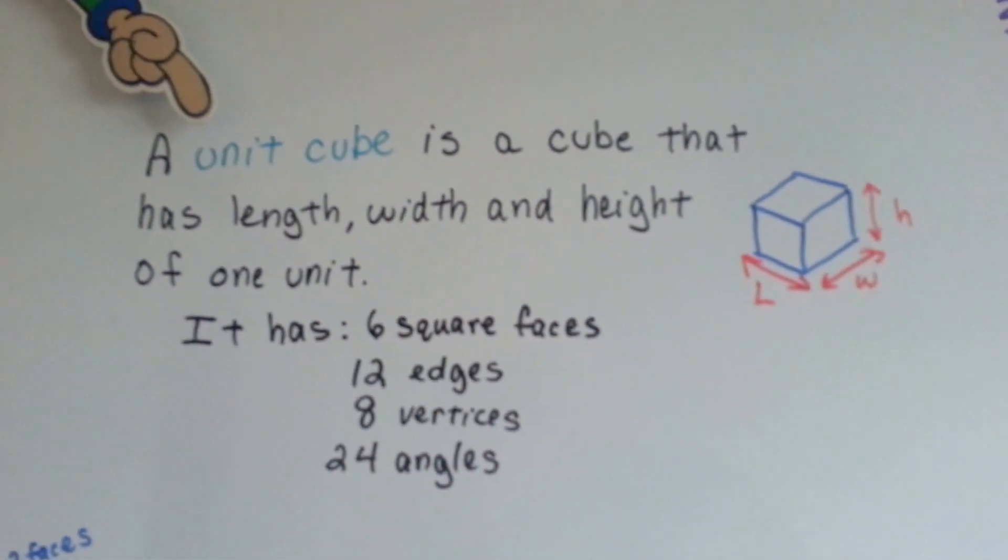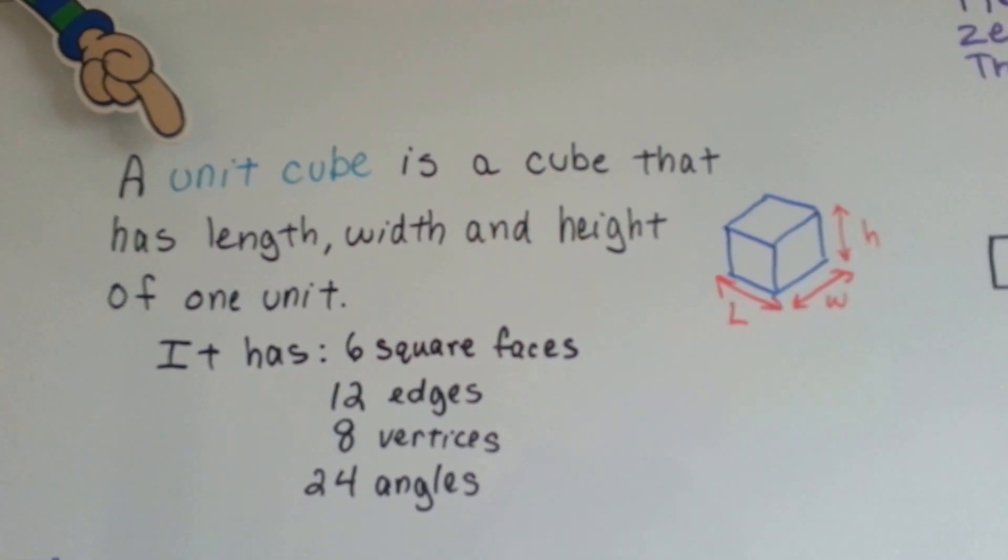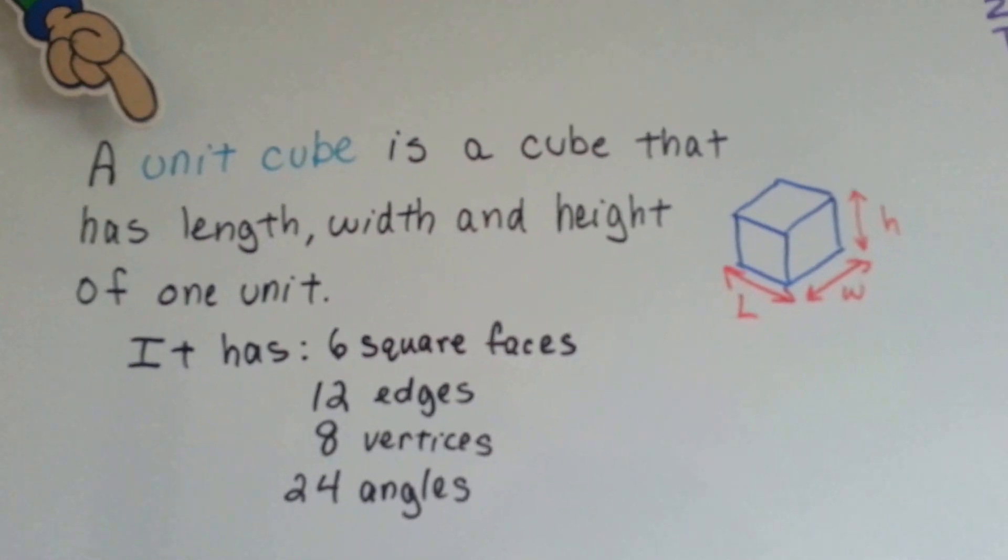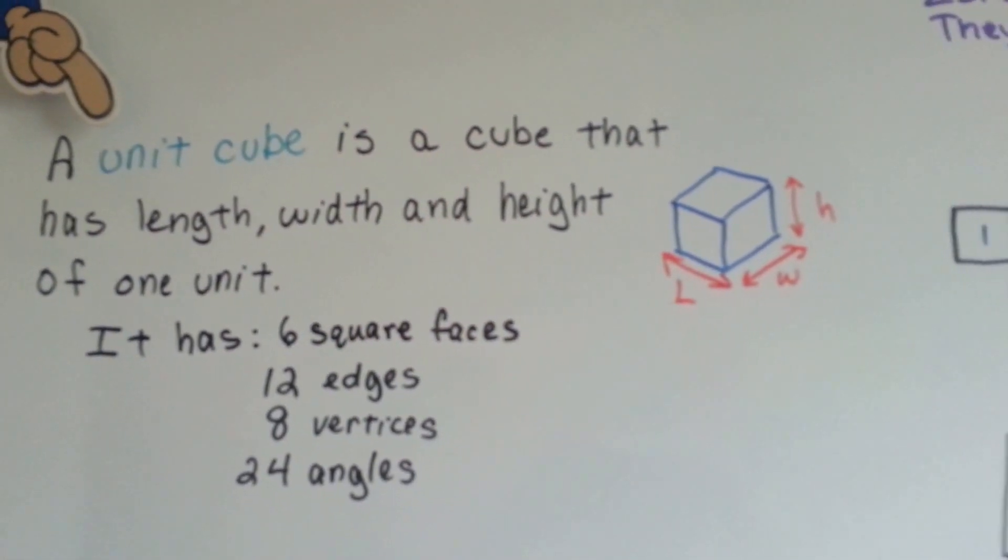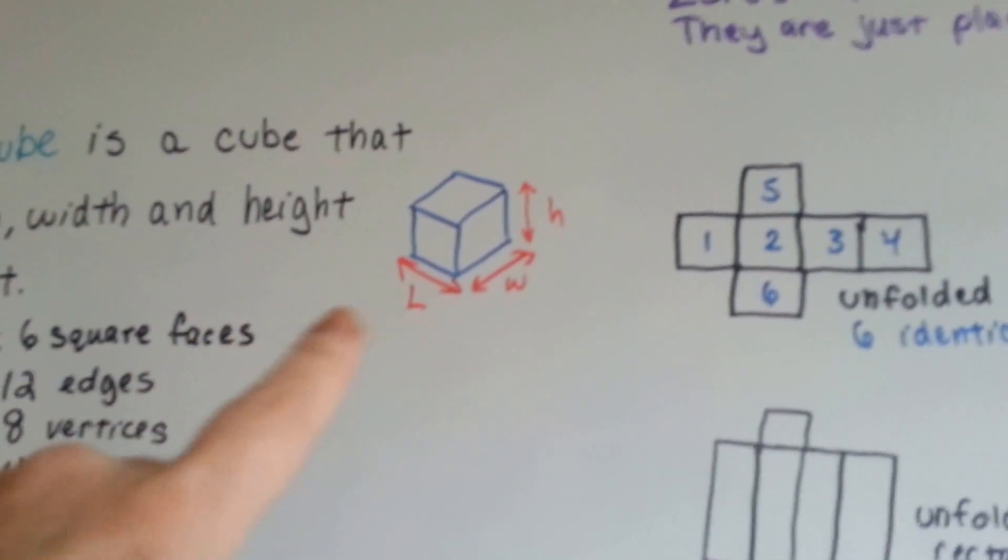A unit cube is a cube that has length, width, and height of one unit. It has six square faces, twelve edges, eight vertices, and twenty-four angles. Can you see the length, width, and height on this cube?